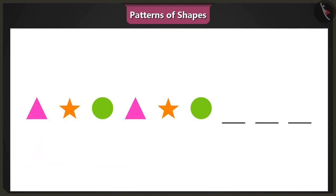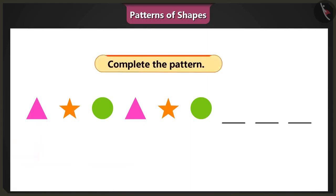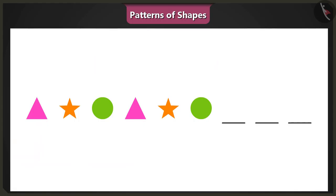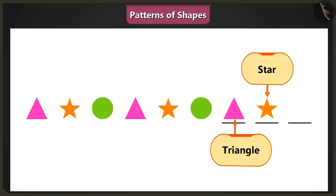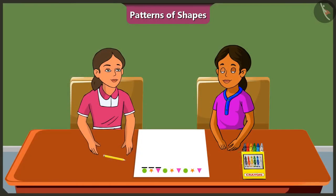Yes, so now please complete the pattern. In this pattern, the next shape will be a pink triangle, then an orange star and then finally a green circle. Very good, Binny.